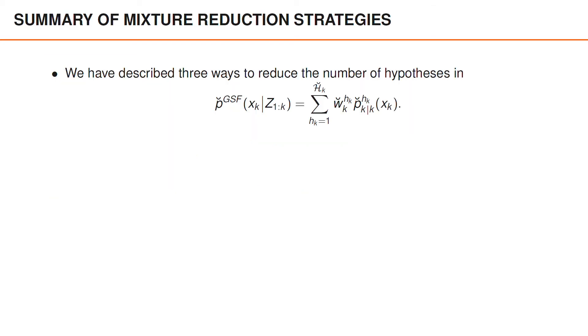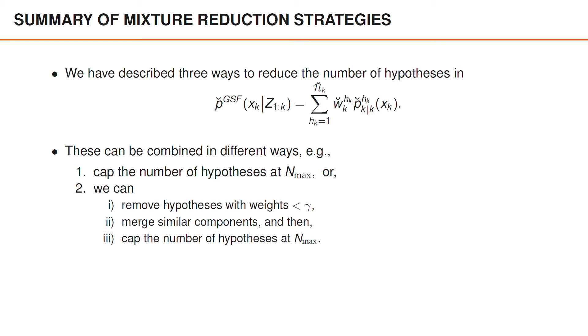To obtain a tractable Gaussian sum filter, we need to limit the number of components in our approximation to the posterior. We have presented three techniques to reduce the number of components in this mixture. These techniques can be combined in different ways. The easiest way to obtain a tractable algorithm is probably to directly cap the number of hypotheses in the mixture, and prune all hypotheses but the n-max best ones. You may obtain slightly better performance, for instance by first removing components with small weights. This may reduce the computational complexity. And then go through the hypotheses and merge similar components, before you finally cap the number of hypotheses to n-max. Importantly, once we are done reducing the number of components in the Gaussian mixture, we obtain what we refer to as the posterior in the Gaussian sum filter. We use w_k and p to denote the weights and densities in the posterior mixture according to the filter.